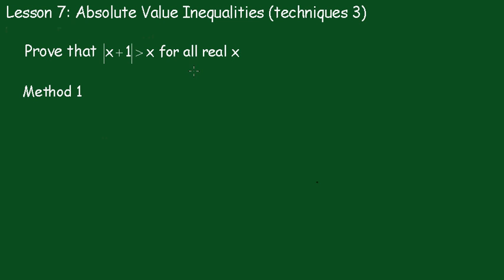Now, the first method is what I call the conditional method. So we'll set that up. I'll write it down first. Now we can remove those absolute value signs and write x plus 1 is greater than x.